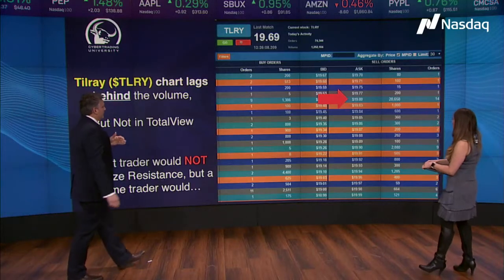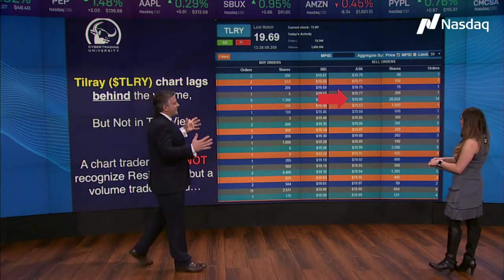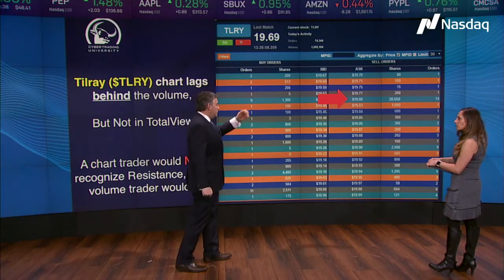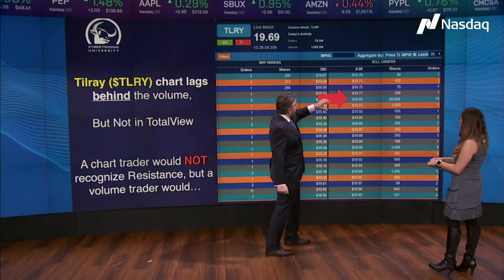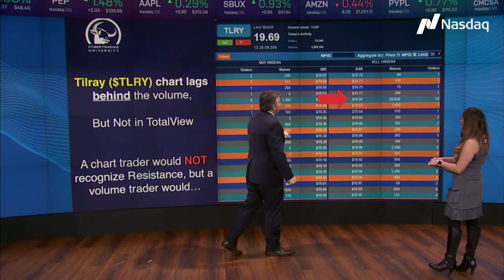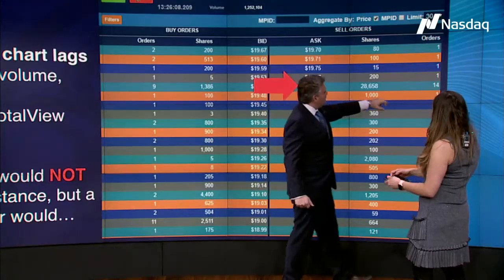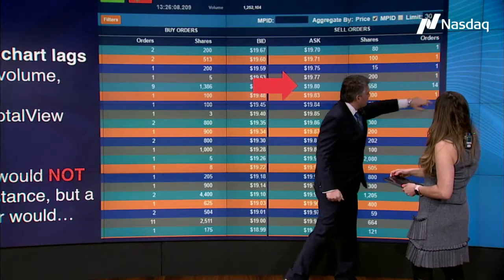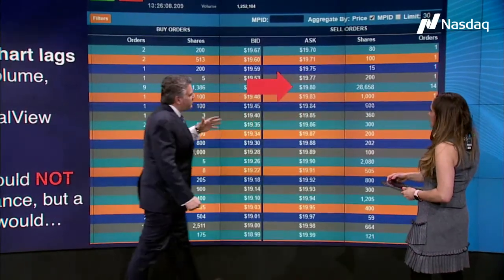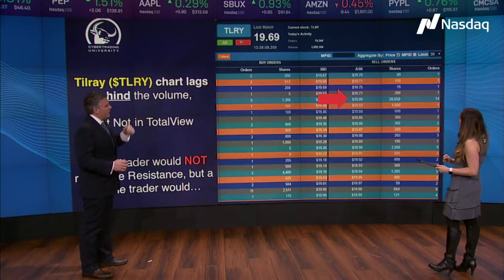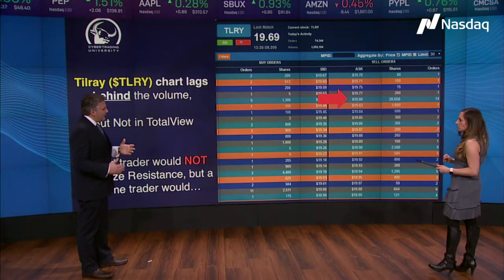You'll notice there is a 28,000-share seller — not as large as the other ones with a hundred or 300 thousand — but you do have something there. Sellers make resistance levels, so that would be our resistance level. Not only is there a seller, but this is another very important tool on Total View: you've got 14 different orders. That's why the orders are very important — you get an idea of how many participants make up that 28,000.